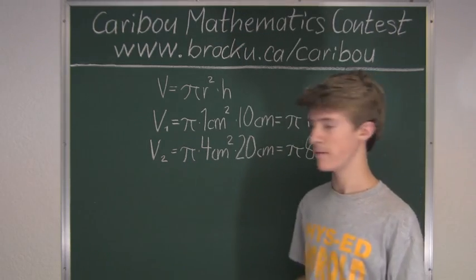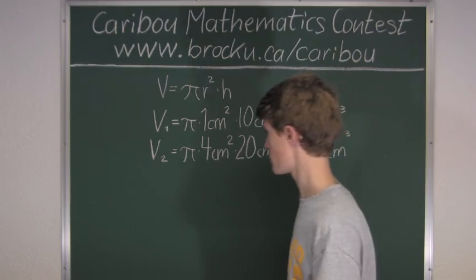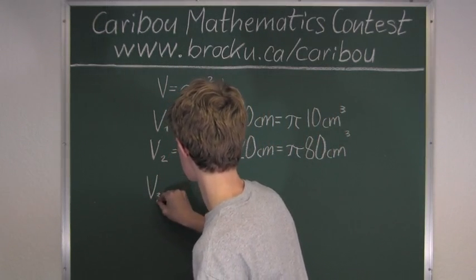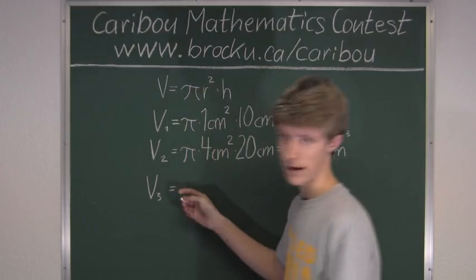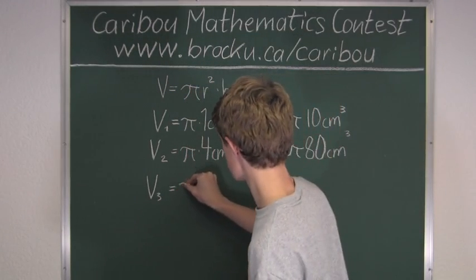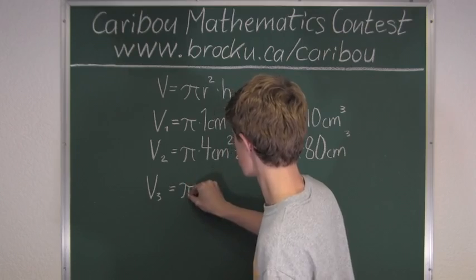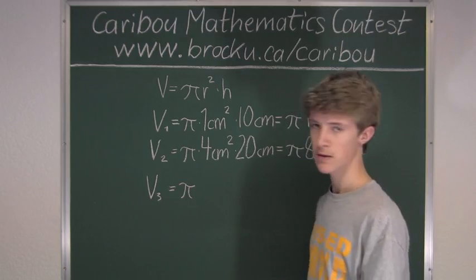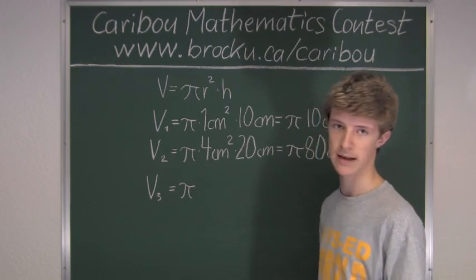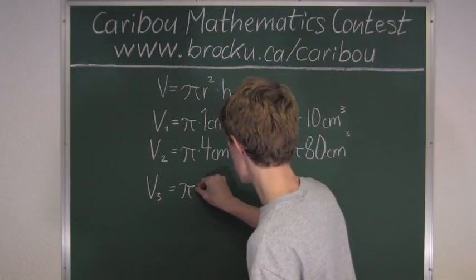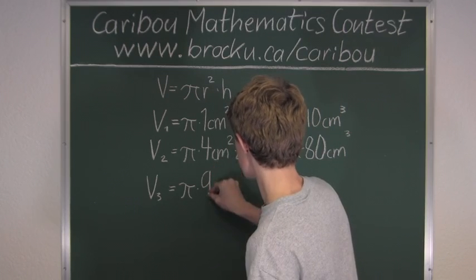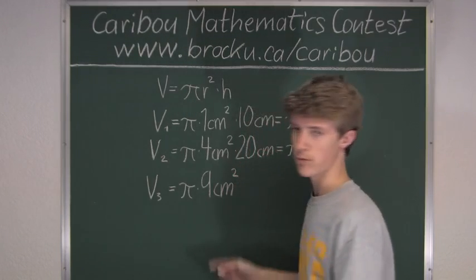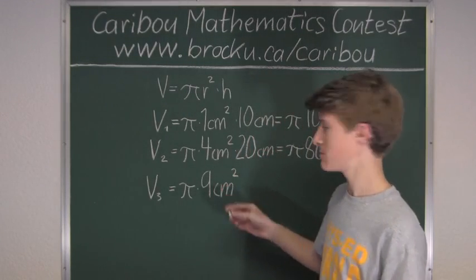Now we will write V3 for the volume of the third cylinder. We have pi times radius squared. The radius is 3 centimeters, so the radius squared would be 9 centimeters squared. We do not know the height, so we will just have times h.